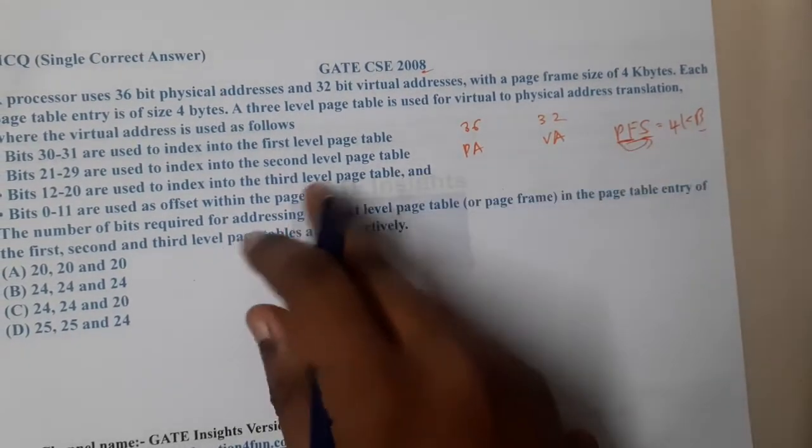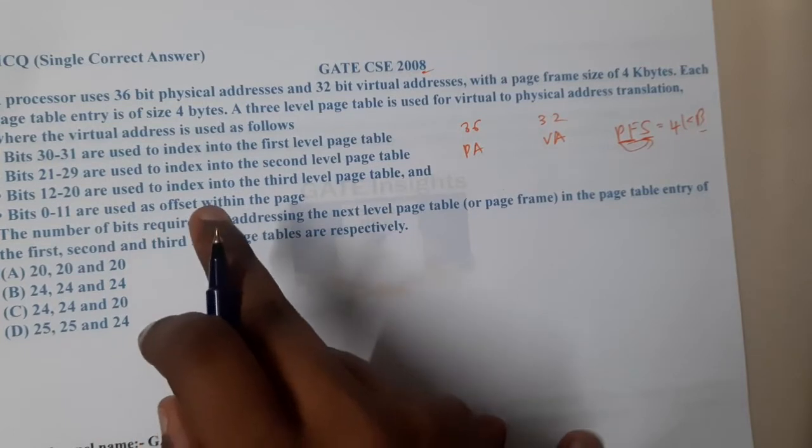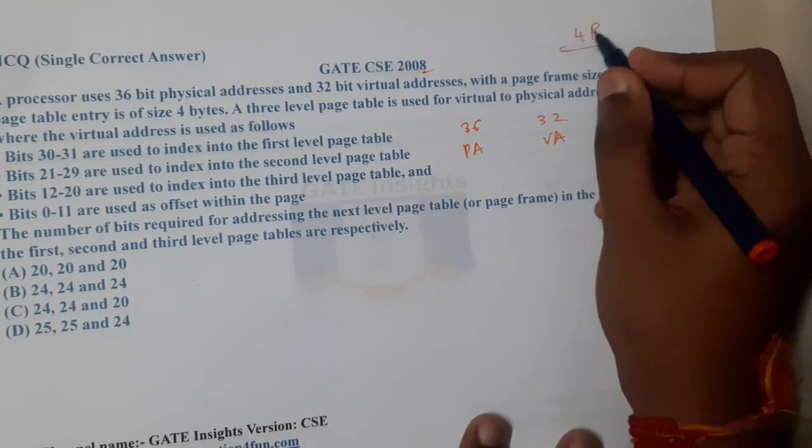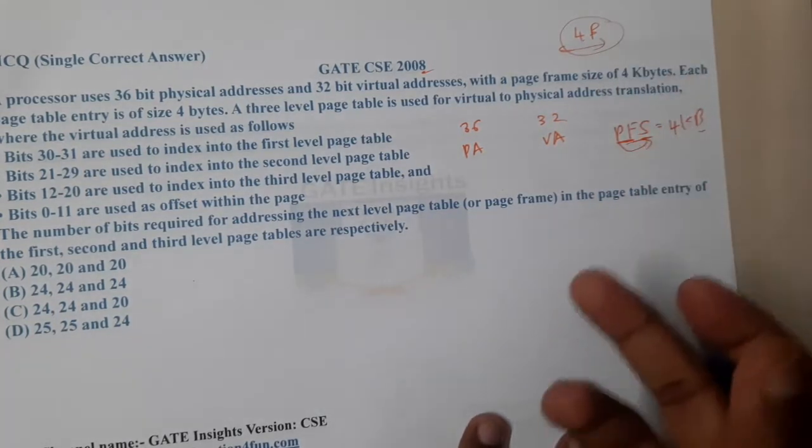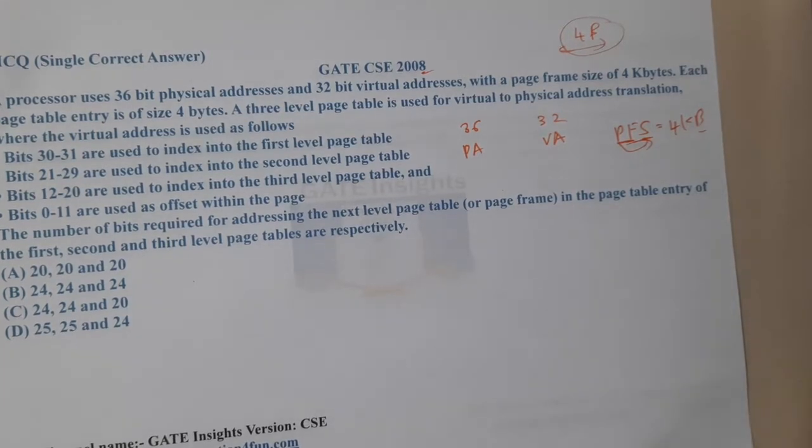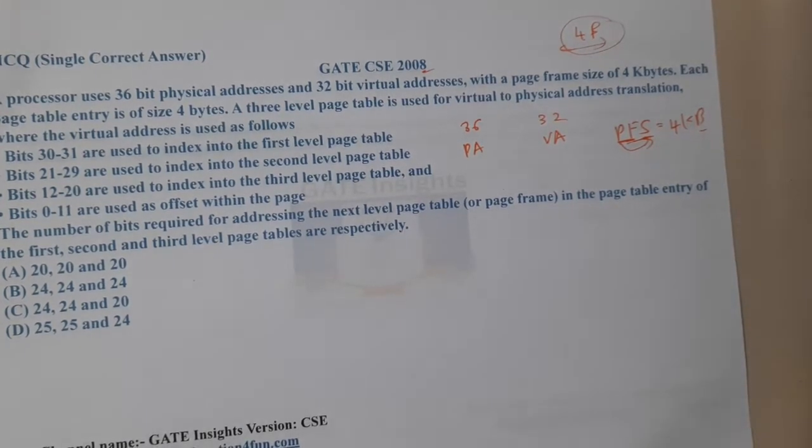They are saying each page table entry is 4 bytes, so the entry in page table is 4 bytes. I think we can directly calculate the page size from here. Now what they are saying is a three-level page table is used for virtual to physical address translation.